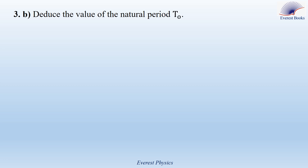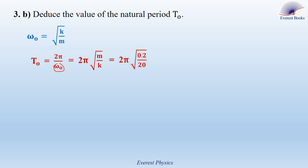Part 3B: deduce the value of the natural period T0. We found the expression of the natural angular frequency. The natural period is given by T0 equals 2 pi over omega zero. Replacing omega zero by the square root of K over M, this becomes T0 equals 2 pi times the square root of M over K. With mass equal to 200 grams (0.2 kilograms) and force constant equal to 20 newtons per meter, the natural period is equal to 0.628 seconds.